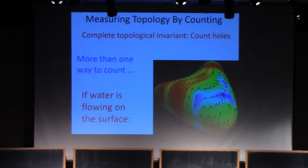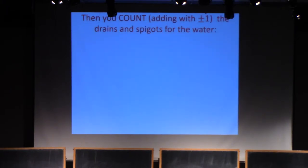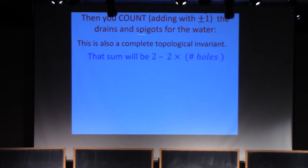For example, consider water flowing on a surface, a two-dimensional surface. Because of the topology, there have to be drains and spigots or sources and sinks for the water. We can count, adding with plus or minus one, the drains and spigots for the water. There's a rule for how to decide when it's plus one or minus one, which we don't have time to go into. This also turns out to be a complete topological invariant. Two complete topological invariants have to be functions of each other because they're complete. It turns out that this sum over drains and spigots will be two minus two times the number of holes.